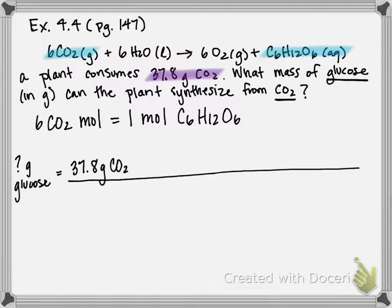And I'm starting with 37.8 grams of CO2. So the first step in doing one of these conversions is to get out of grams and into moles. So we've learned this previously in chapter three, in order to go from grams to moles of something, you divide by the molar mass. So we're going to calculate the molar mass of carbon dioxide, one carbon plus two oxygens.